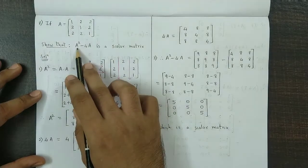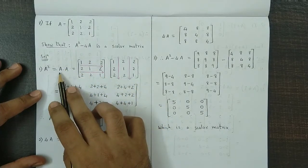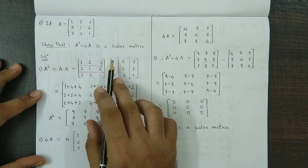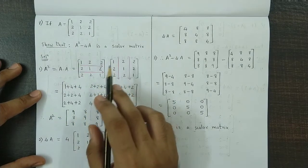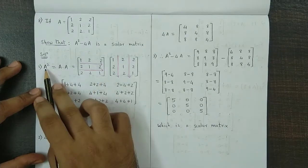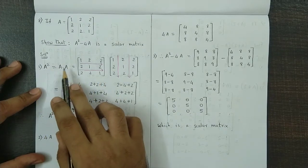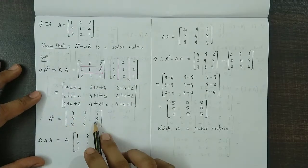So remember to obtain A square we multiply the matrix A by itself. We don't square it. Just like normal numbers we square, we don't do that over here. So A square is obtained by multiplying A with itself.